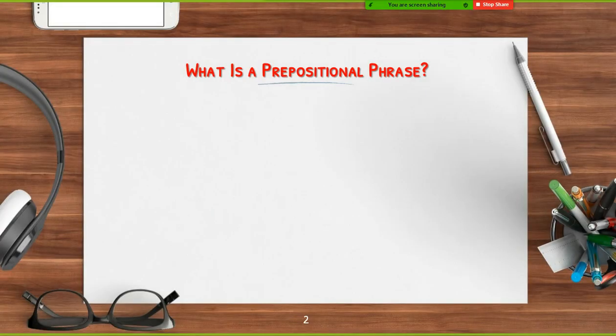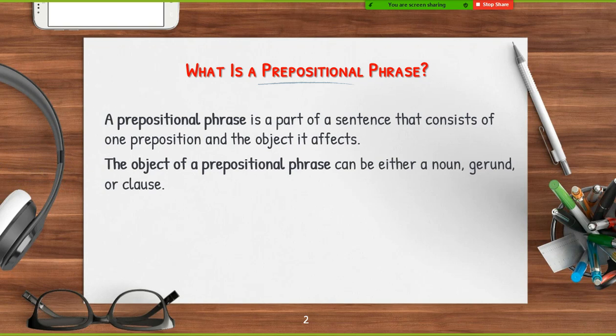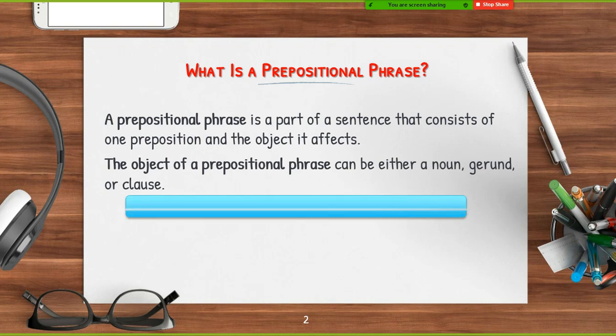First, let me remind you about the prepositional phrase. As we said, it's part of a sentence and it consists of a preposition and the object of that preposition. The object can be a noun or a pronoun. Also, the object of the prepositional phrase can be a gerund or a clause. Let's read some examples to discover those types.